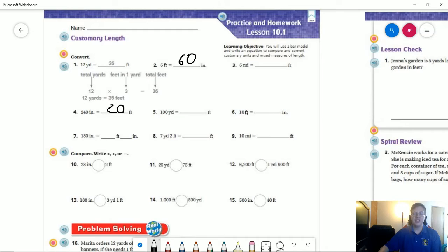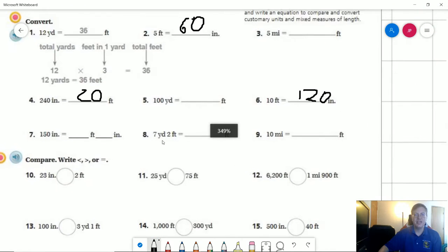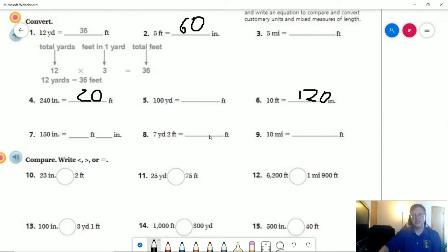Number six, again, 120 inches would be 10 feet. Number eight, I can do seven times three to get my number of yards and add two feet to that. So 21 plus two gives me 23.